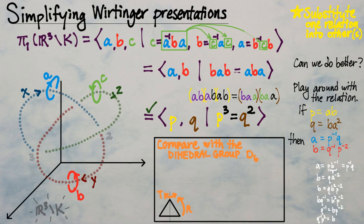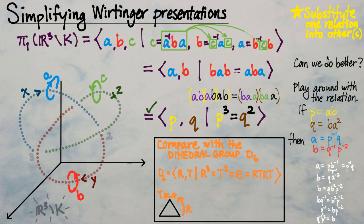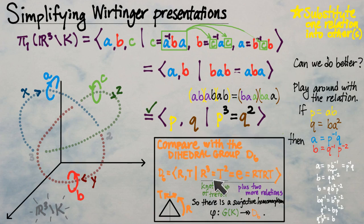The dihedral group has as generators a reflection T across a reflective axis of symmetry and a 120-degree order-three rotation R about the center of the equilateral triangle. A presentation is: generated by R and T, where the rotation has order three and the reflection has order two, so R³ = T² = identity. That also means R³ and T² are equal to one another — a familiar echo of our knot group relation P³ = Q².